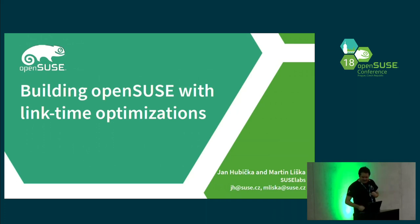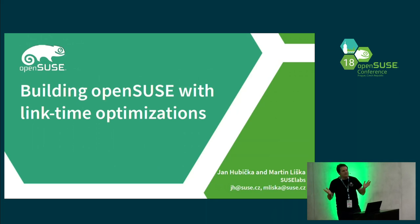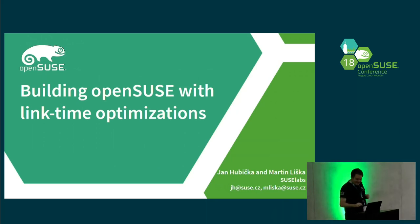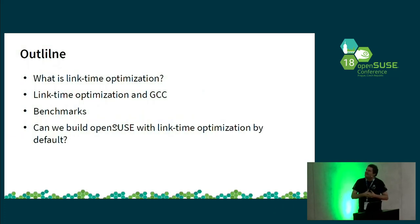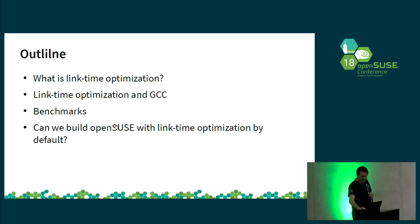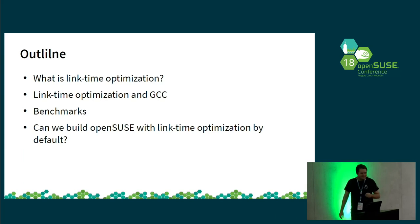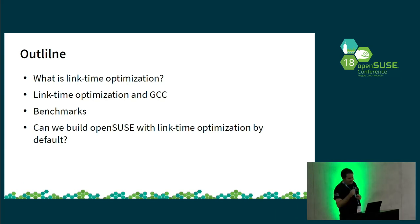I would like to say something about link time optimizations, and I would like to try to convince you that it's an interesting thing to try out. In the first part of the talk, I will simply explain what link time optimization is, then I will spend some time showing you benchmarks, and then we will try to discuss if OpenSUSE can be one of the first distributions built by LTO — maybe the first one, because I don't know about another one.